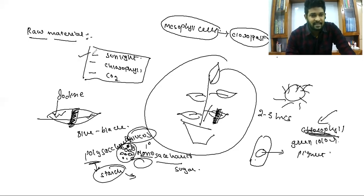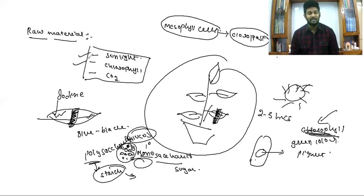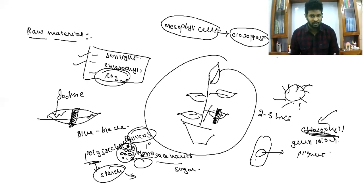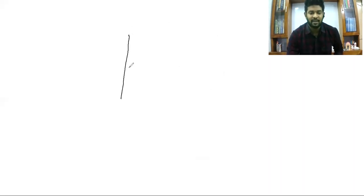By this experiment, we have proved that sunlight and chlorophyll are important raw materials to perform photosynthesis. Now we have to show that carbon dioxide is also an important raw material to perform photosynthesis. To prove this, we have to do one more experiment. Again, we have to take a well-matured plant with matured leaves.